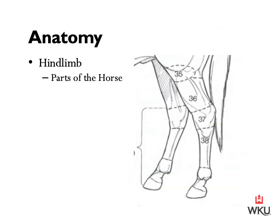Now we're ready to look at hind limb anatomy. We'll do the same as before and start with parts of the horse. Hind limb anatomy is going to be very similar to the forelimb. Starting at the bottom: hoof, coronary band, then pastern and fetlock. Number 38 is the cannon. Number 37 is the hock. Number 36 is the gaskin. And number 35, the stifle. The differences between the hind limb and forelimb start at the hock moving up: the hock, the gaskin, and the stifle.